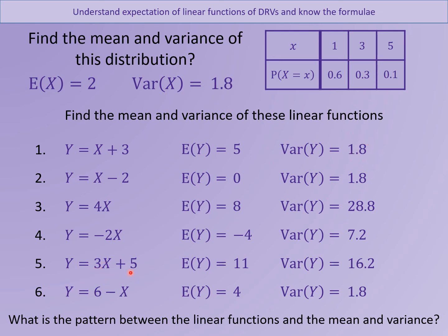For the example where X is multiplied by 3 and then 5 is added, the expected value of Y is E[X] times 3 plus 5, giving 11. For the variance of Y, we just multiply the variance of X by A squared — that is 3 squared, multiplying by 9 — giving that result. The reason B doesn't affect variance is that adding the same number to all values doesn't change how spread out they are; it just makes them all bigger.